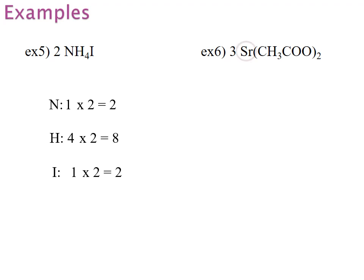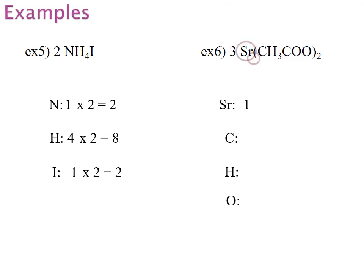Now let's look at strontium acetate. I have Sr. I have a capital C. I have a capital H. I have another capital C, but I will not rewrite capital C because it is already in my list of atoms. I have a capital O, and I have another capital O, so again I will not rewrite that O for it is already in my list. Sr: there is just 1, and I will have to multiply it by the 3 that precedes the formula, giving me a total of 3 strontium atoms. C: I have 1 here and 1 here — that is a total of 2 carbons. I will have to multiply it by 2 because it is inside of the brackets, and then I will multiply by the 3 that preceded the formula, giving me a total of 12 carbon atoms.